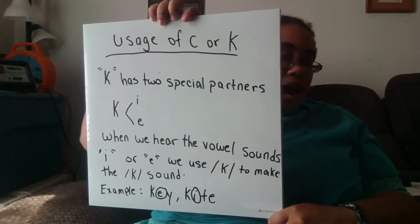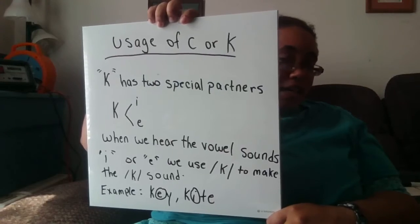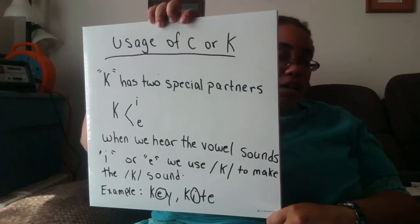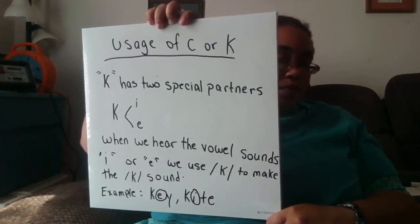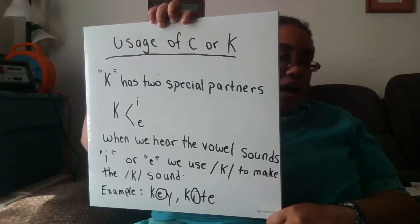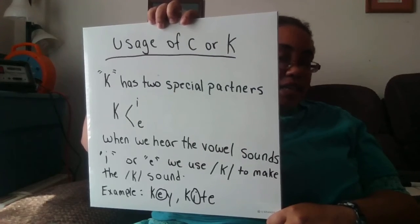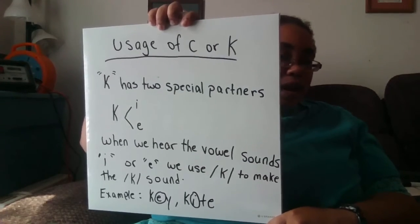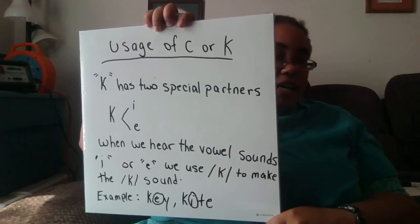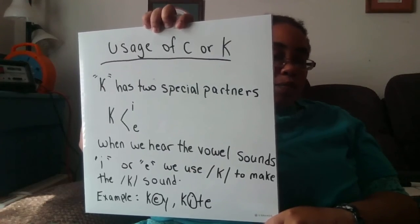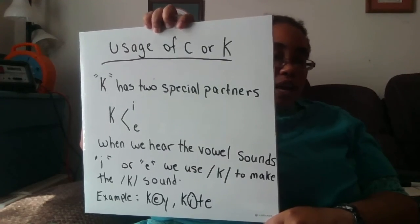Next we have the word 'kite.' We have I — I is the other special partner. K, I, T, E. So we have KI and KE as the special partners with K.